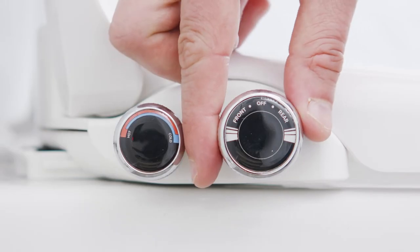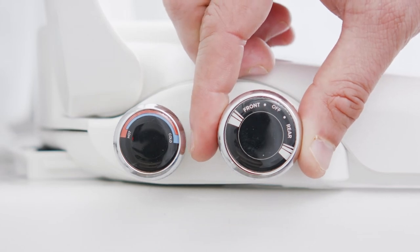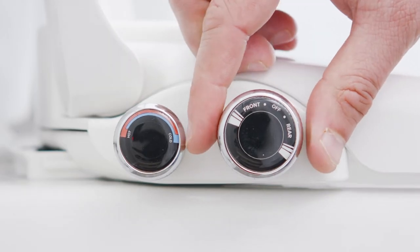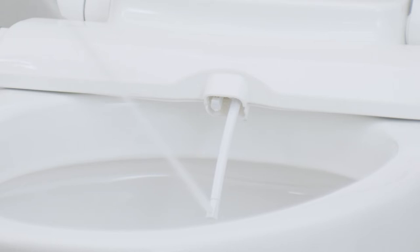For a front or feminine wash, turn the dial clockwise. The further the dial is turned, the stronger the water pressure will be.